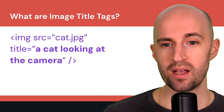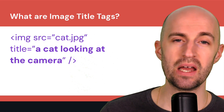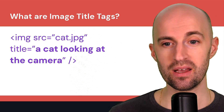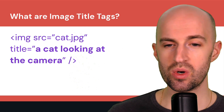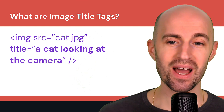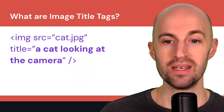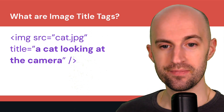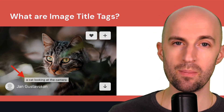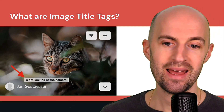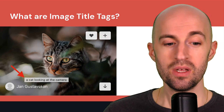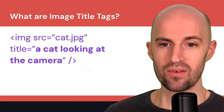Here's a quick code snippet that shows you where the title attribute — the title tag — is located within the image tag. You'll see that it has the source, which is the URL where the image is located on the server, and then the title equals, and the text within that is the image title. So when I hover over this image, you'll see a little tooltip pops up in the browser. In this case, it's a cat looking at the camera — and that's the actual image title tag right there.